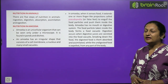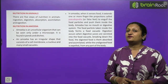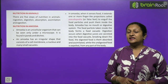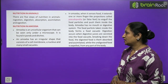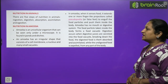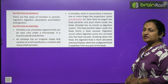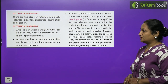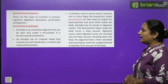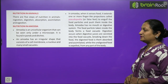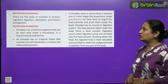Amoeba is a unicellular organism — its body has only one cell, and that single cell performs all functions. Amoeba is found in ponds and ditches and can be seen only under a microscope. Its body has an irregular shape and consists of a cell membrane, a nucleus and many small vacuoles.